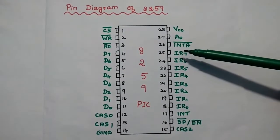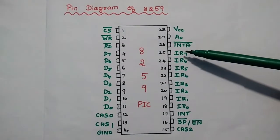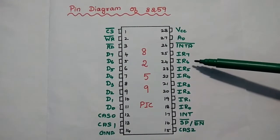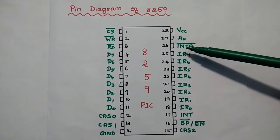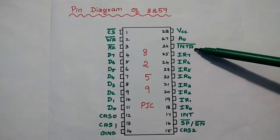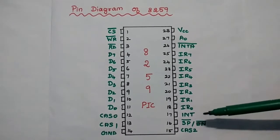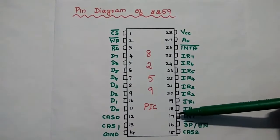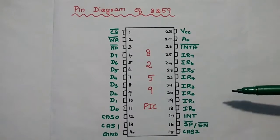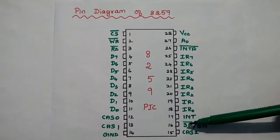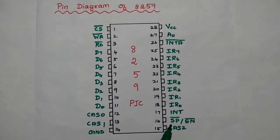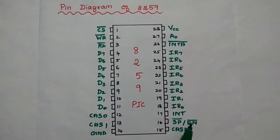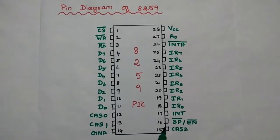There are 8 interrupt request lines, and these lines are used to control the priority interrupts. INTA bar is the interrupt acknowledgement from the processor. INT is the interrupt request from the 8259 to the processor. The next one, SP bar/EN bar, is the slave program or enable buffer signal, which is also used to enable the cascading operation.